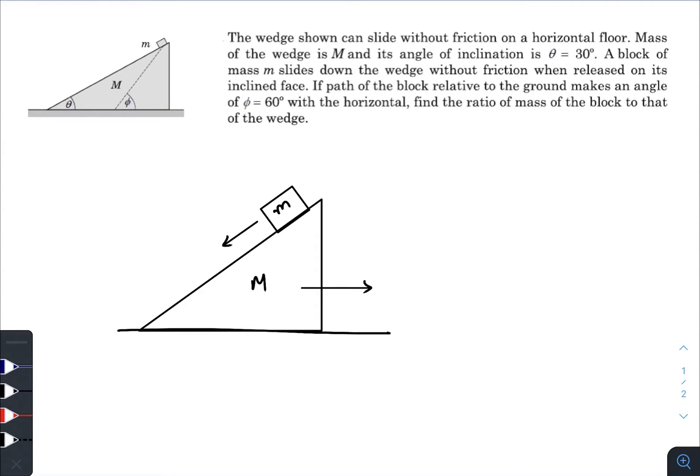When it is released from rest, the block will start sliding downwards and the wedge will go towards right. Here comes the thing that you cannot predict the velocity of this mass while standing on the ground, but if you change your reference frame to the wedge, then with respect to the wedge you will observe that the velocity of this mass is downwards to the plane.